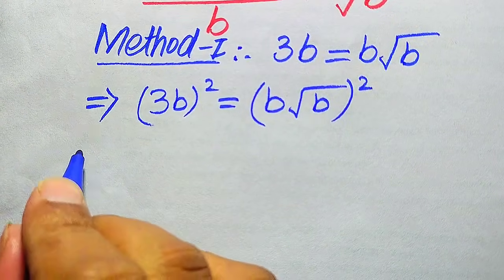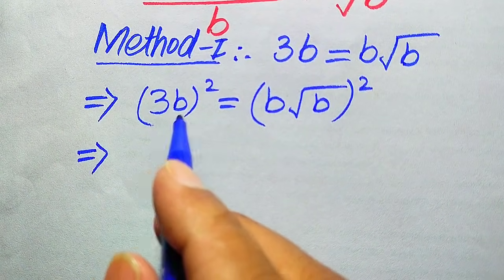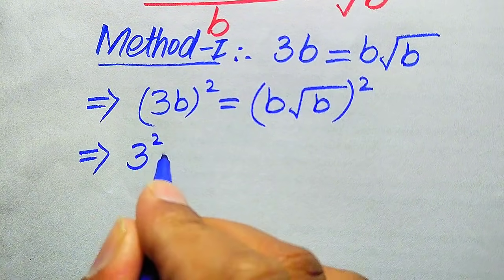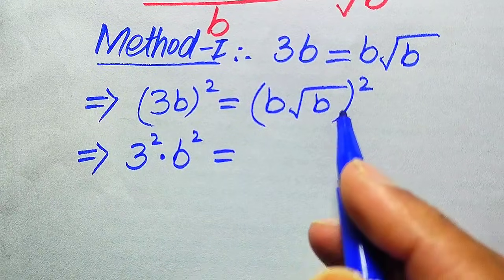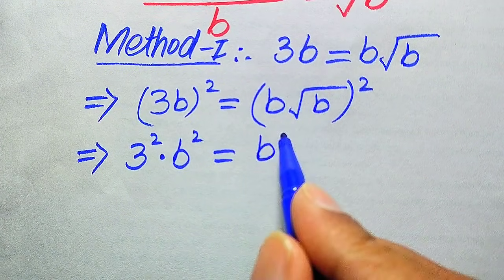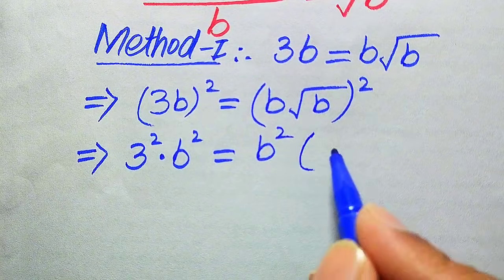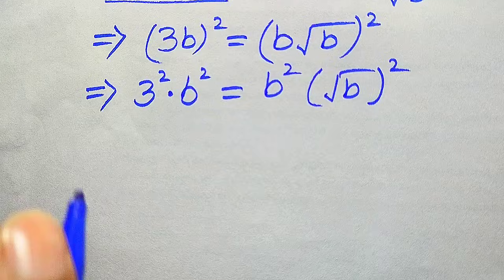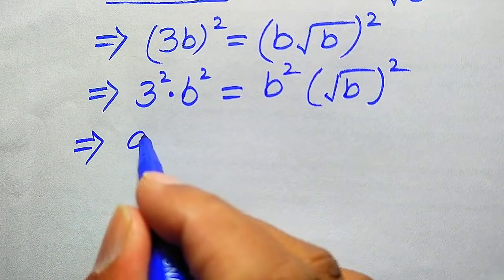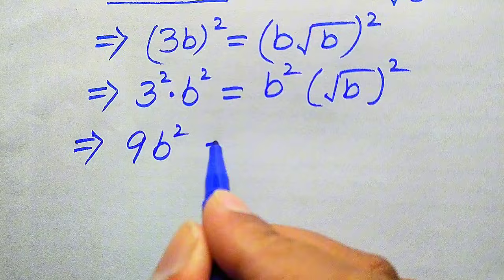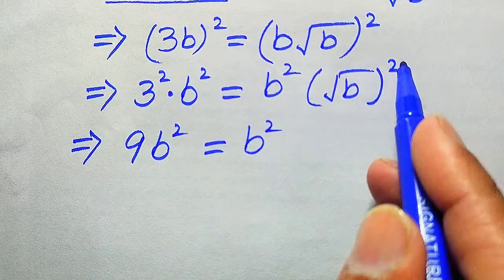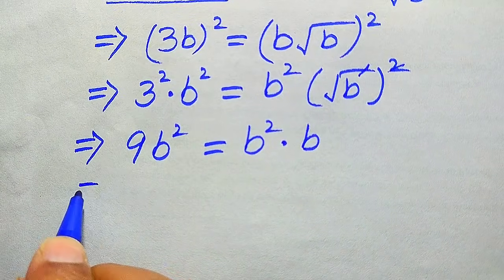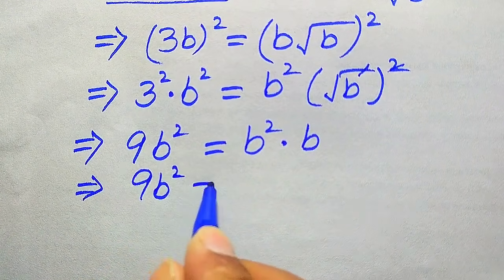In the next step we apply the square separately on both values. It becomes 3 squared multiplied by B squared equals B squared times square root of B, whole squared. So 3 squared is 9, giving us 9B squared equals B squared times B, since the square and square root cancel, leaving B only. So we obtain 9B squared equals B cubed.